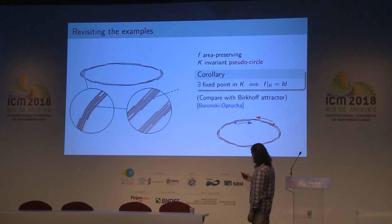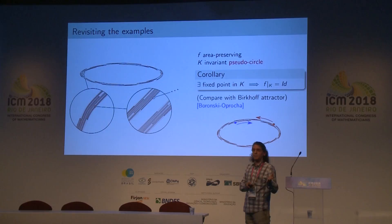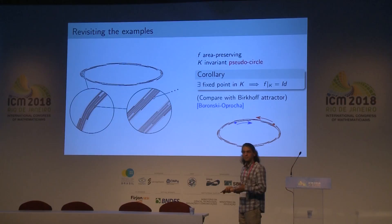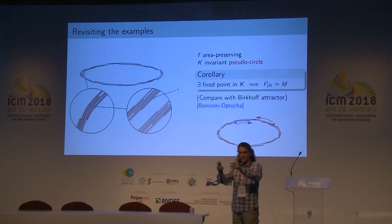To show consequences of this topological result, consider the pseudo-circle invariant by an area-preserving diffeomorphism. We know there are non-trivial examples where it's invariant, like Handel's example. But if you assume there is a fixed point in the pseudo-circle, the theorem implies that everything is fixed — the whole pseudo-circle is fixed point-wise. In contrast, without area preservation, you can have points rotating with different velocities, giving very rich dynamics in the pseudo-circle: periodic points of all periods, positive entropy, and so on.